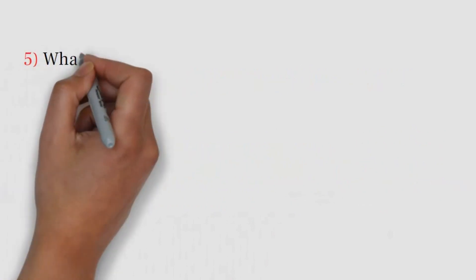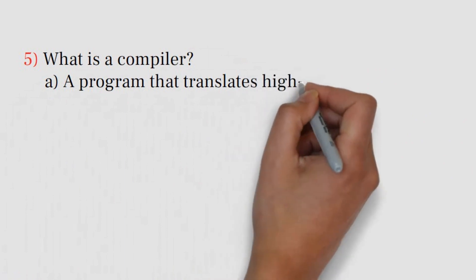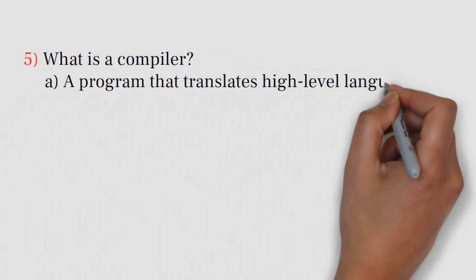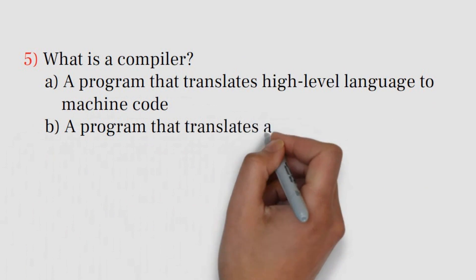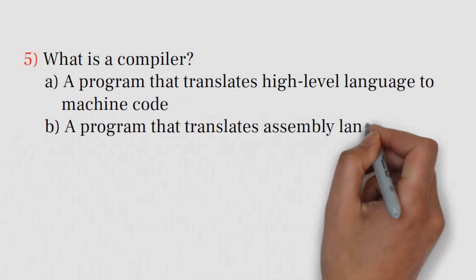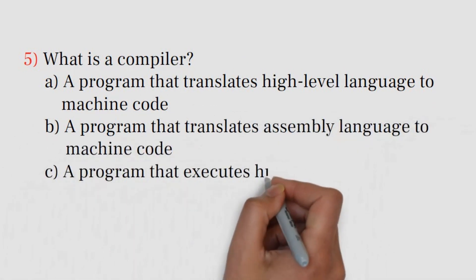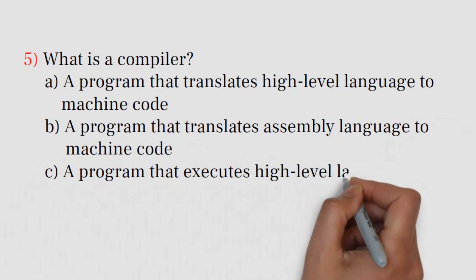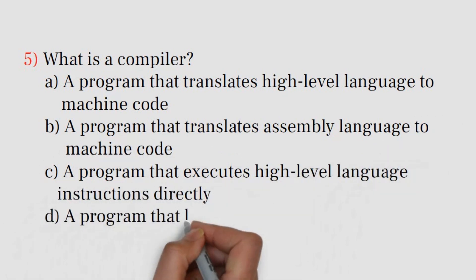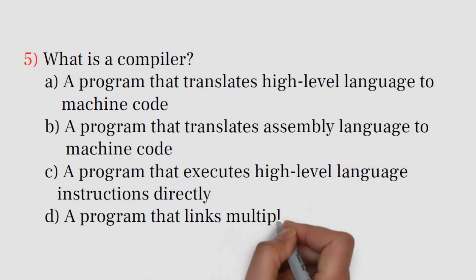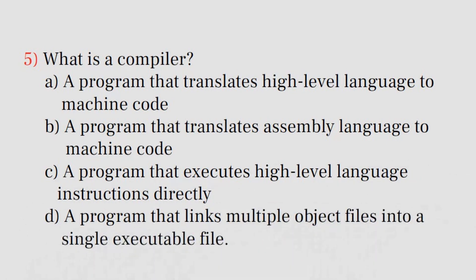Question number 5. What is a compiler? A. A program that translates high-level language to machine code. B. A program that translates assembly language to machine code. C. A program that executes high-level language instructions directly. D. A program that links multiple object files into a single executable file.